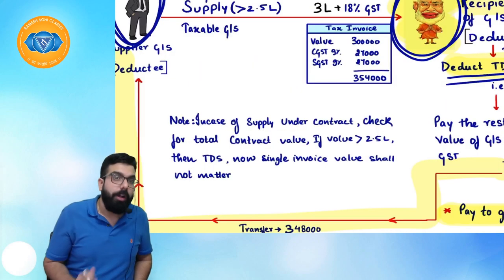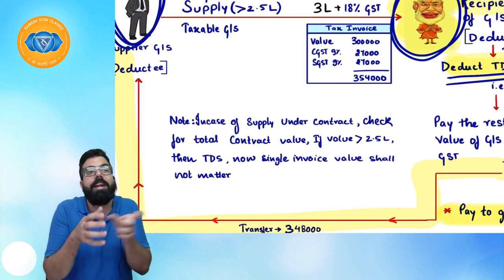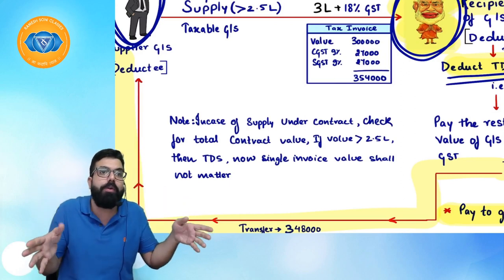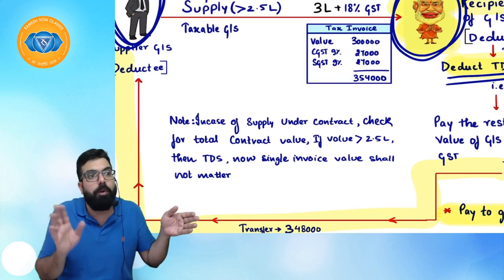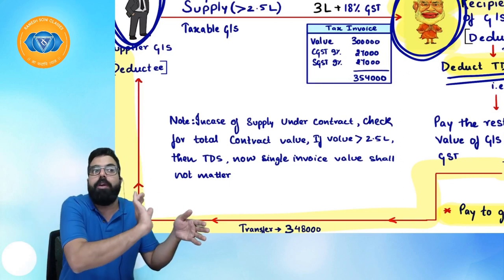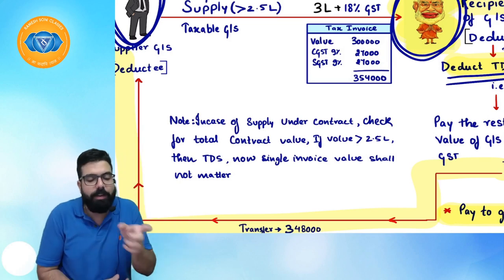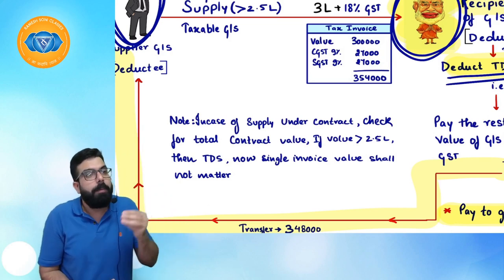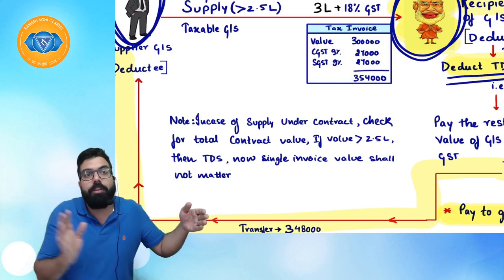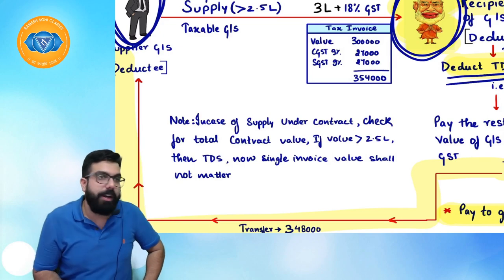For TDS determination, you do not look at individual invoices — you look at the total contract value. If the total contract value is more than ₹2.5 lakh, TDS must be deducted on all individual invoices. For example, if invoices are ₹20,000 each but the total contract value exceeds ₹2.5 lakh, TDS is required on all invoices.